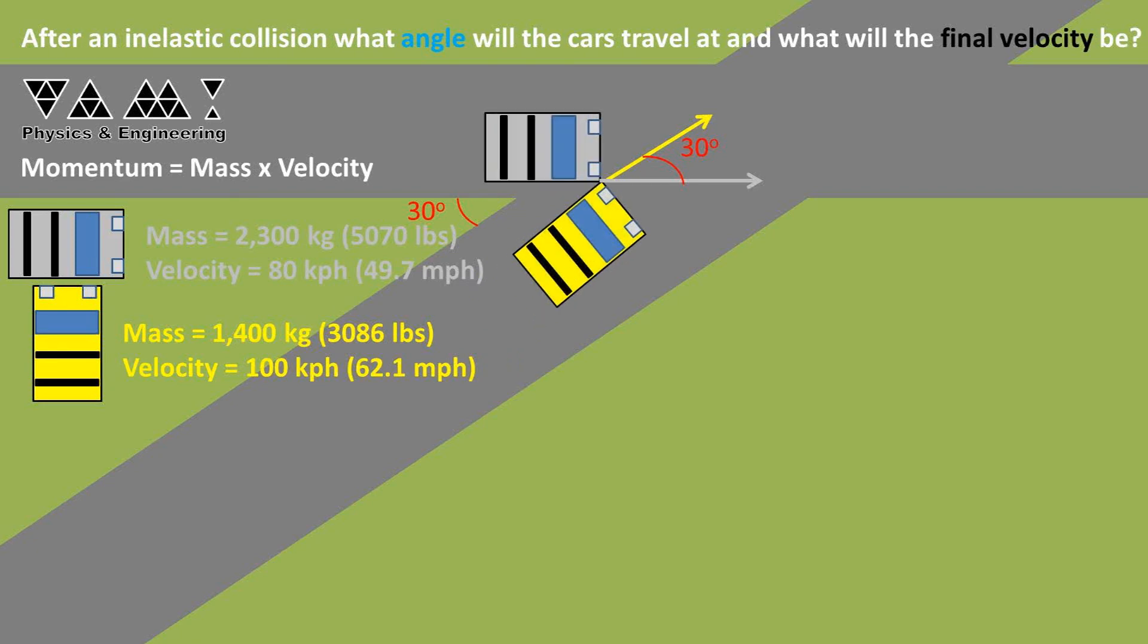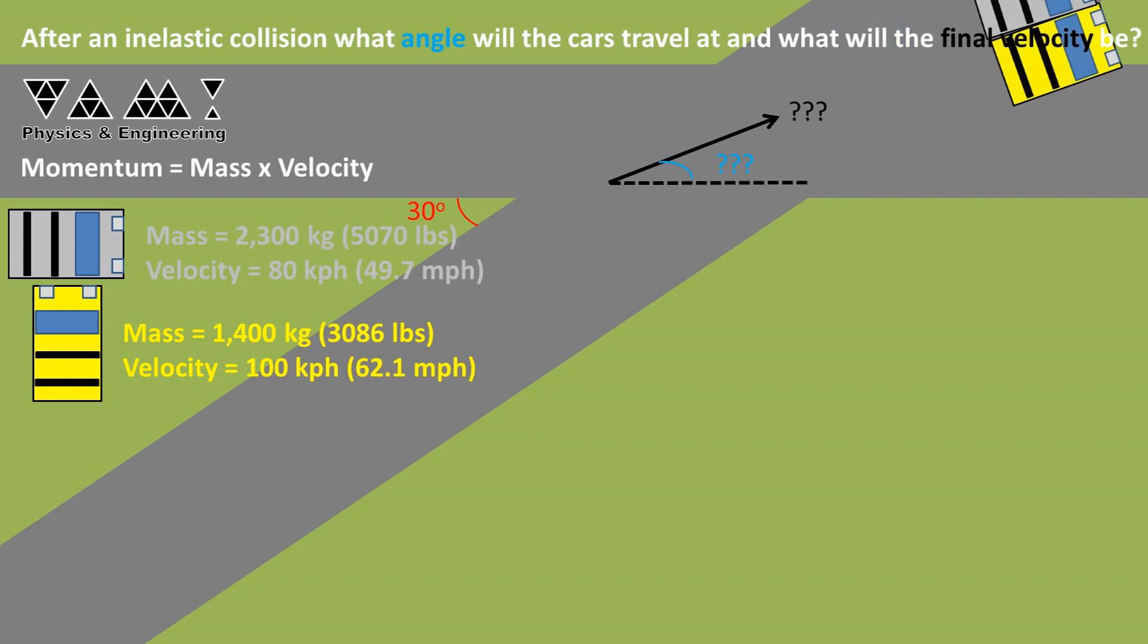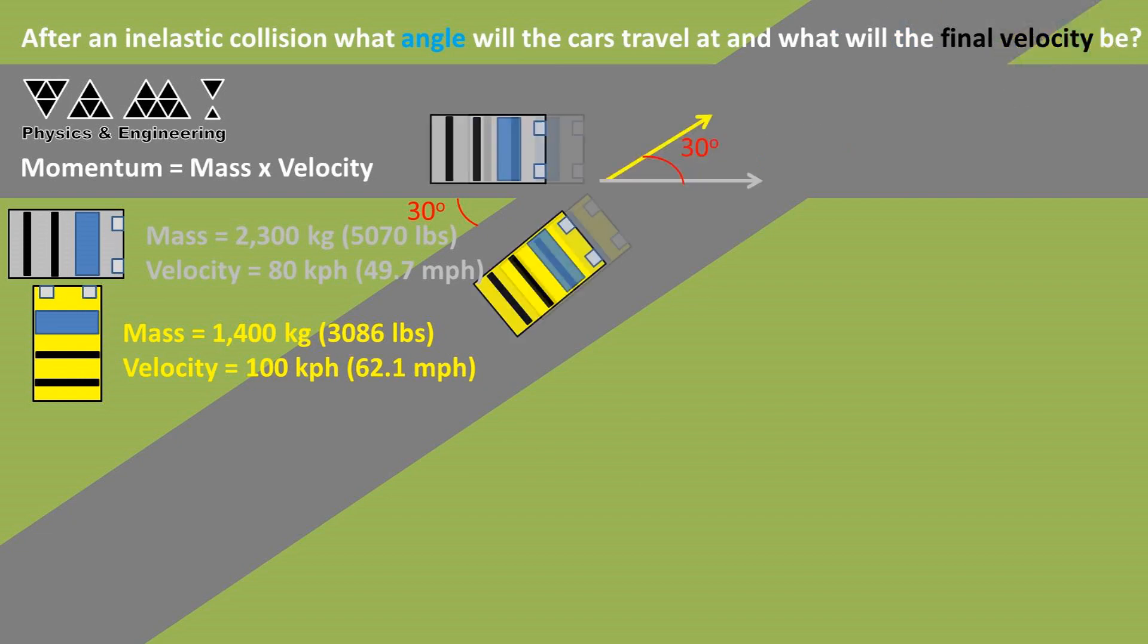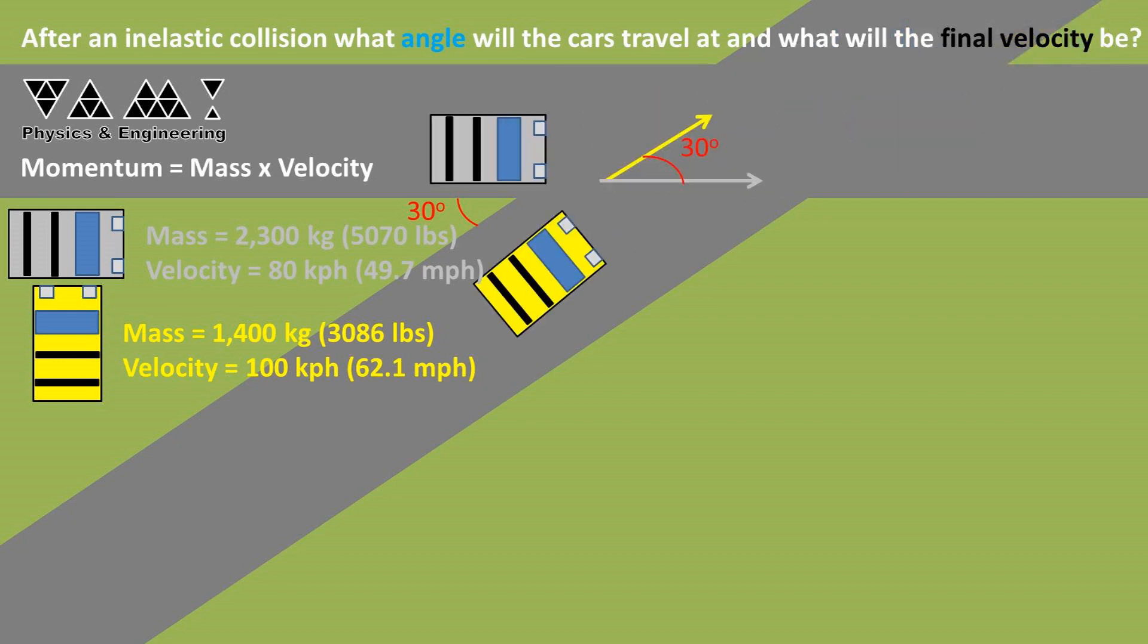In this problem, we have an inelastic collision of two cars at a 30-degree intersection as depicted. I've listed the masses and velocities of each vehicle. We want to find the angle the cars will travel at and the final velocity of the two cars.